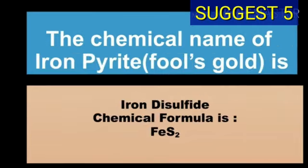The chemical name of iron pyrite (fool's gold) is iron disulfide and chemical formula of iron pyrite is FeS2.